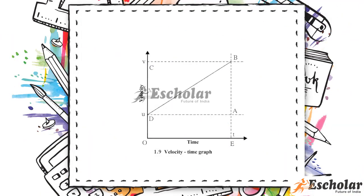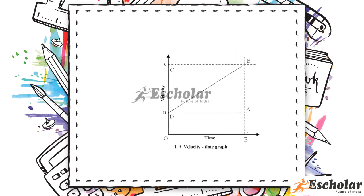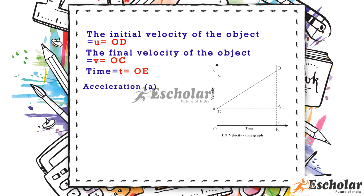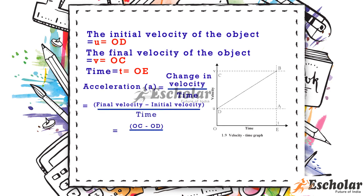Figure 1.9 shows the change in velocity with time of a uniformly accelerated object. The object starts from point D with velocity u; its velocity keeps increasing and after time t it reaches point B. Initial velocity u = OD, final velocity v = OC, time t = OE, and acceleration a = (v - u) / t = (OC - OD) / t.